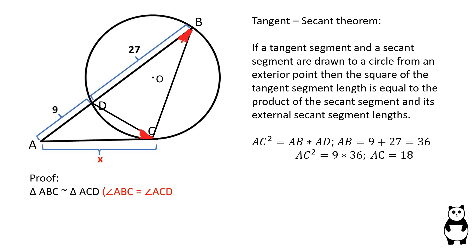Angles ABC and ACD are equal according to the alternate segment theorem, and angle BAC is shared by both triangles.